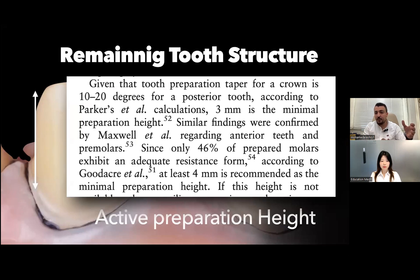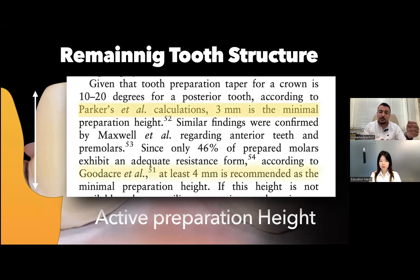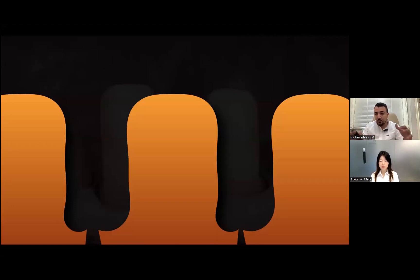If we have degree of taper from 10 to 20 or 22, to achieve a good resistance and retention form, the height of the prep should not be below 3 to 4 millimeters, which is good for the scanner to read.